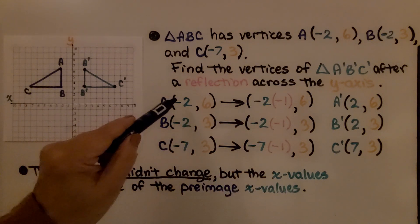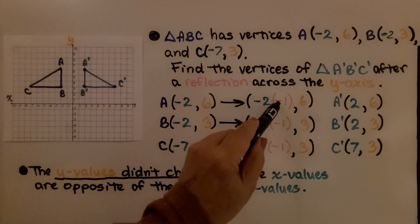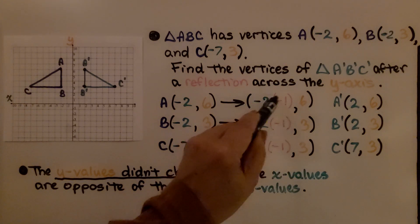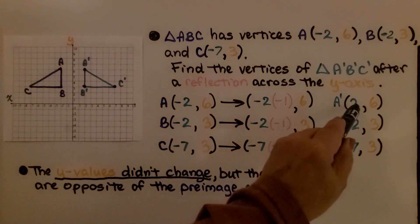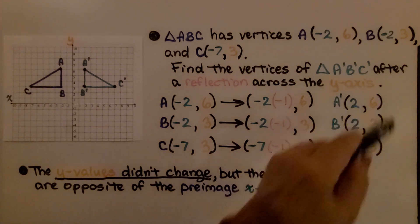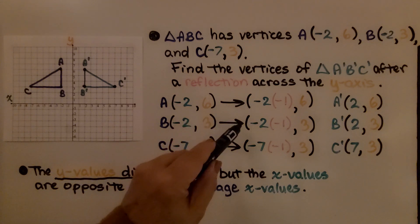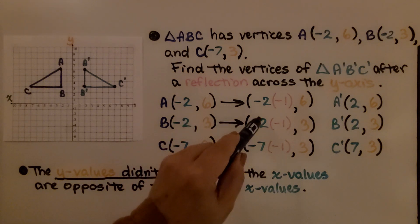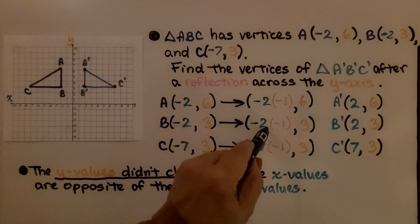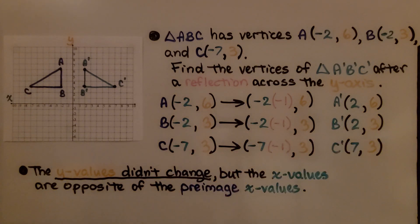If A is at negative 2, 6, we're going to do negative 2 times negative 1 and 6 for y. Negative 2 times negative 1 gives us positive 2, so A prime is at 2, 6. B is at negative 2, 3. It's going to map to negative 2 times negative 1 for the x-value, which gives us positive 2, and y is 3.